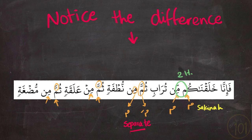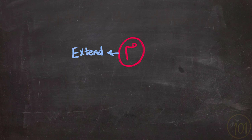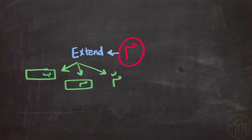So to summarize, Meem must be lengthened if it is followed by Ba' or Meem, or if it is added to itself giving us a Meem with Shadda. And all of this will be lengthened for two Harakat.